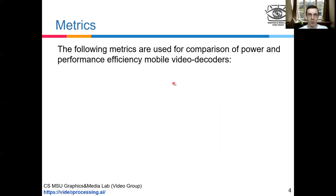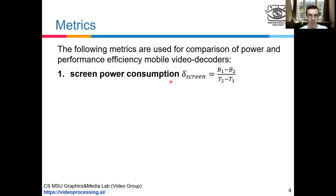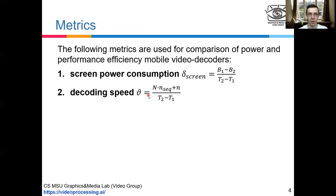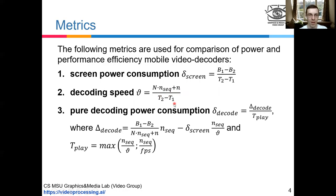Our method computes four benchmarking metrics to compare different video decoders and different Android models. The first one is the screen power consumption, which is the ratio of battery level change and time duration, measured while the device is in idle mode. The second one is the decoding speed: we decode the same bit stream until the battery level changes by three percent, so the total number of decoded frames divided by time duration is the decoding speed.